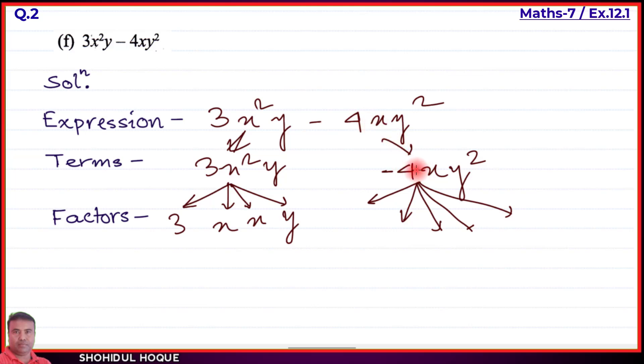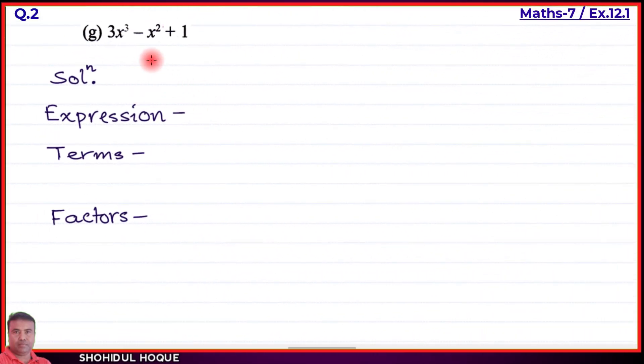The expression branches into terms, and terms branch into factors. -4 equals -2 × 2, giving factors -2, 2, x, y, and y. Part (f) is solved.